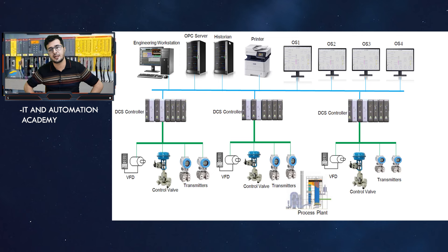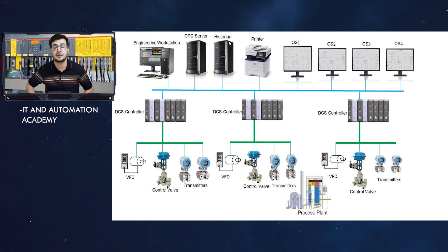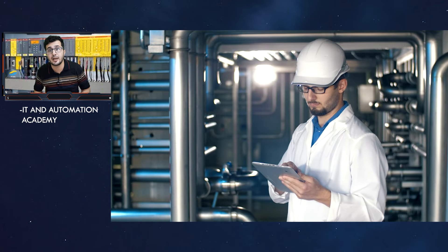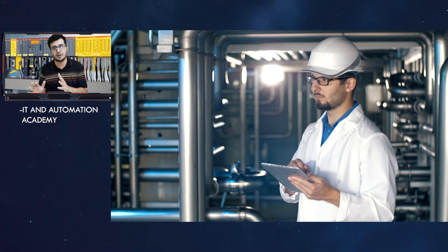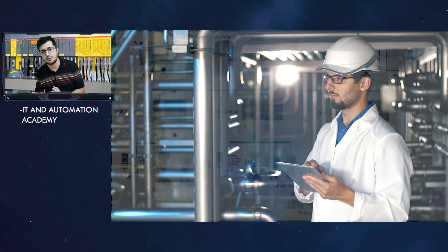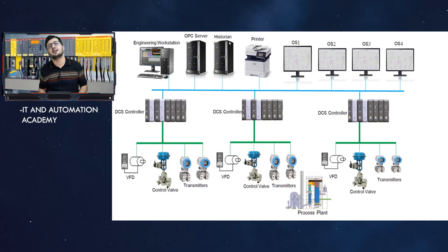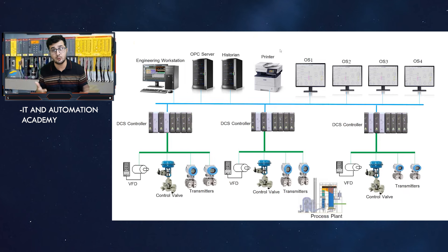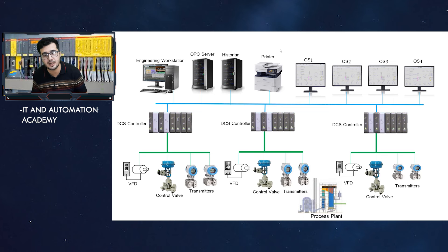You also have a printer — if you need to print a graph or a screen, you would use the printer for that. Then you have operator screens, where operators can see what is going on in the process: the temperature, flow, control valve position, percent open, whether a motor is running. Normally, for each area of the process there may be two screens. If you want to learn DCS, you need to choose a DCS system — learning a specific platform is very important.